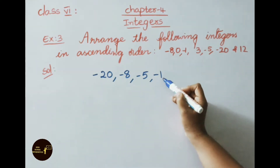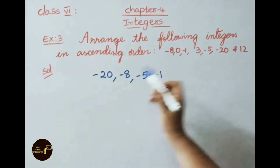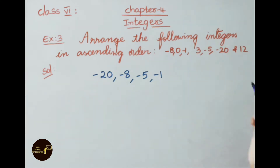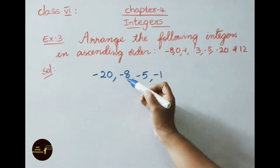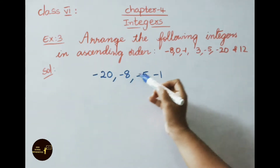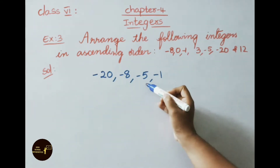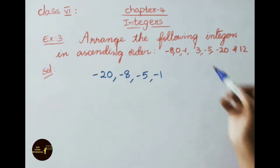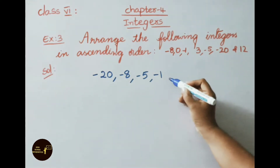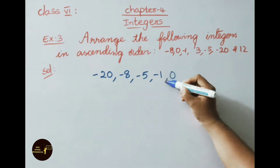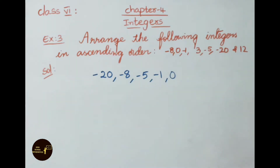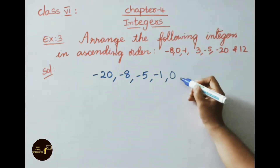In integers, the smallest number will be the greatest and the greatest number will be the smallest. Ascending order means arranging the numbers from smallest to biggest. So here, minus 20 is less than minus 8, minus 8 is less than minus 5, and minus 5 is less than minus 1. Then we write 0, which is neither positive nor negative.